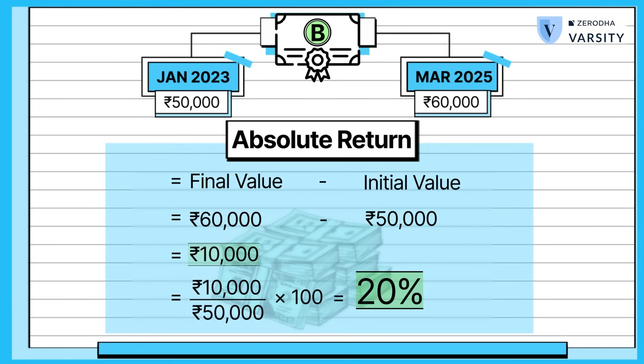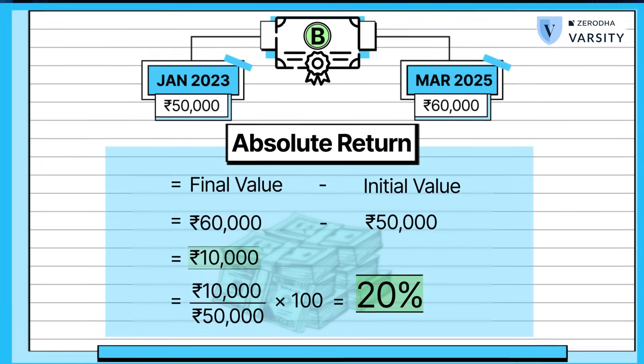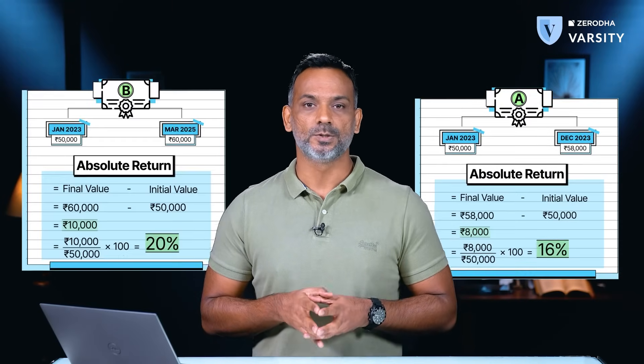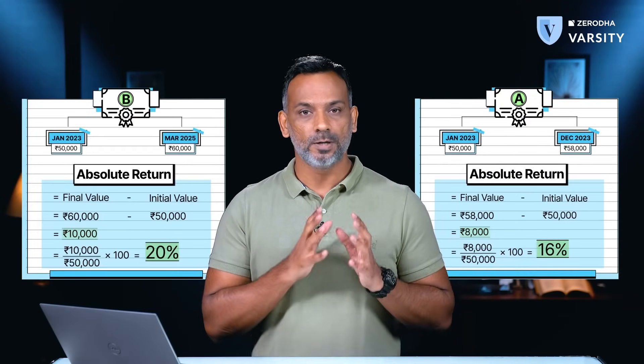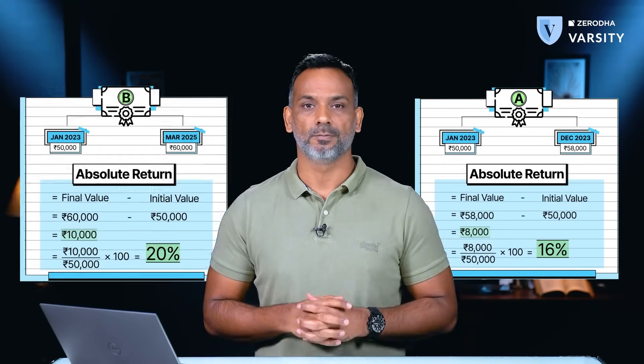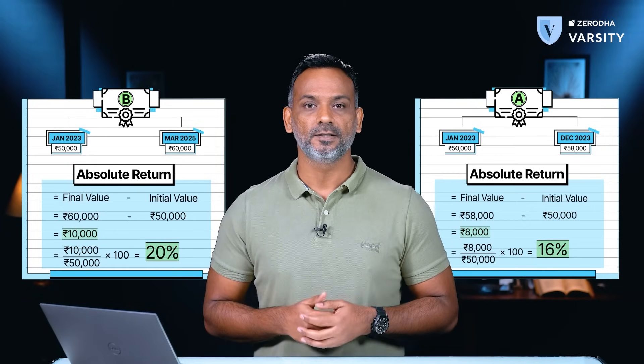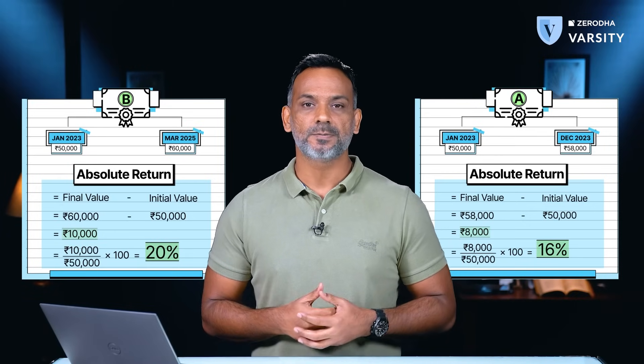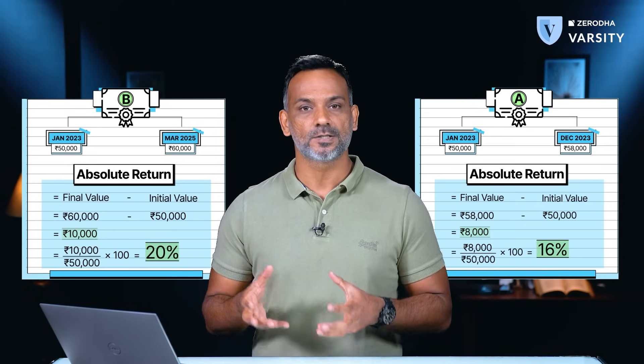If you do all this math you will get the absolute return as 20%. Now if you were to pick an investment, which stock would you choose — Stock A or Stock B? Well, this is a no-brainer: based on absolute return you would naturally pick Stock B. But this is not the right approach. Whenever there is a passage of time, you always have to consider time and the return over that time.